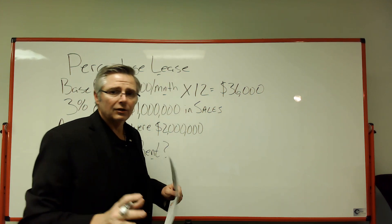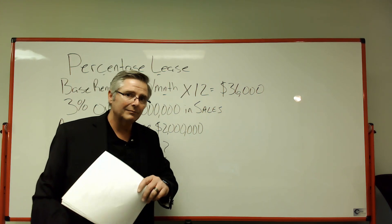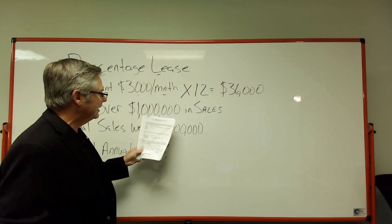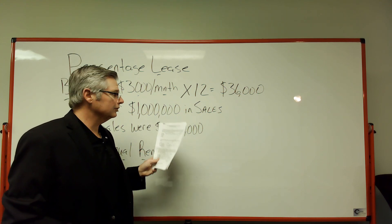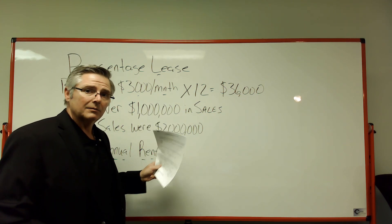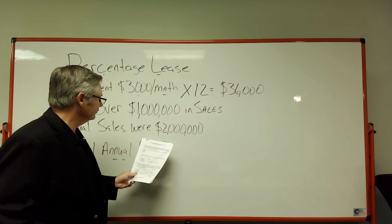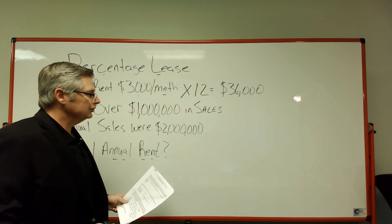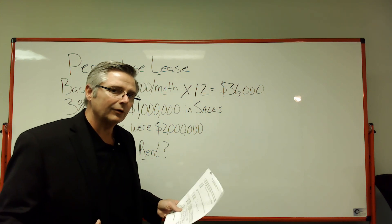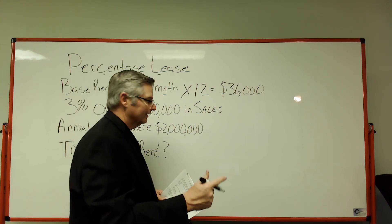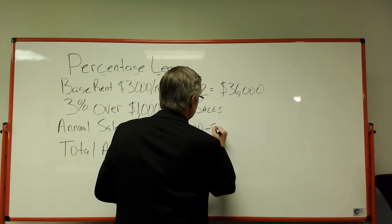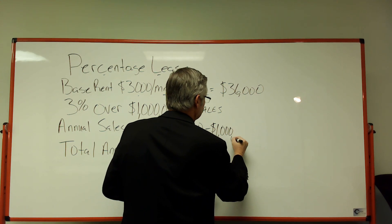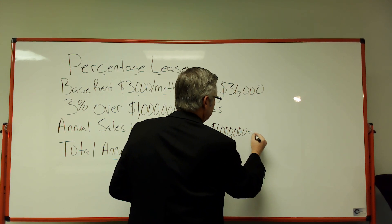Now that could be the total rent, but it's not, because the question says if they make over a million dollars they're going to charge three percent over that million dollars. The sales were two million dollars, so we need to figure out how much over a million dollars they made. Two million minus one million gives you one million dollars in overage sales.